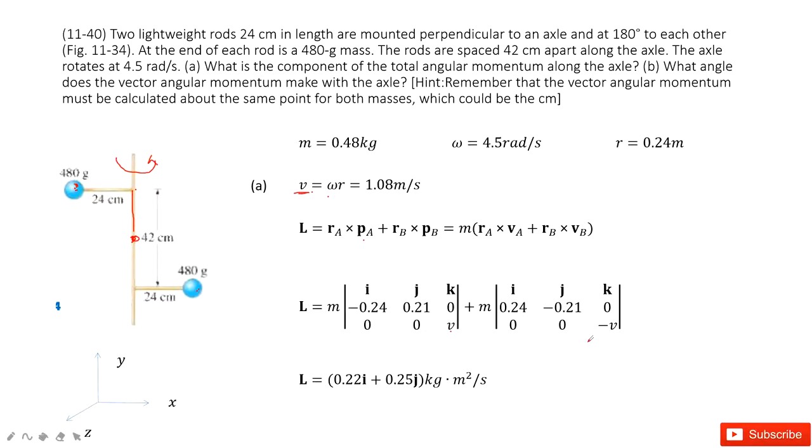Secondly, we look at object b. Object b, the x-axis is positive, 0.24 at there. And then the y-axis, this is y equal to 0, the center of mass. So this one is negative 0.21. The z component is 0.